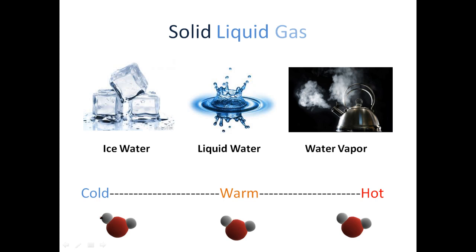Basically, colder things are not going to have enough energy, or are going to have less energy than hotter things. So in this example, if you look at the molecules in ice water, we're just going to see them vibrating a little bit, but they're mostly going to be stationary and not going to be moving around a lot.